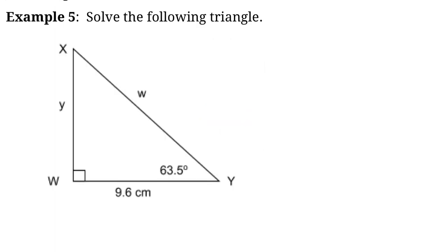The next question asks us to solve a triangle — meaning find all missing sides and angles. We know two of the three angles: 90 degrees and angle Y = 63.5 degrees. Since all angles in a triangle add up to 180 degrees, angle X = 180 − 63.5 − 90 = 26.5 degrees.